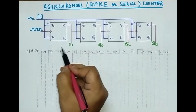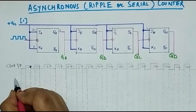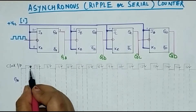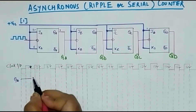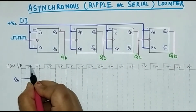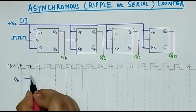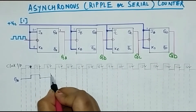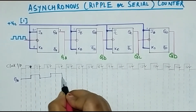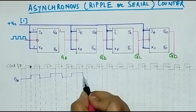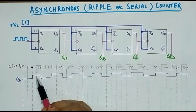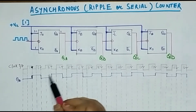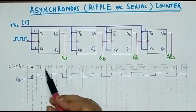Let us draw the output of the first flip-flop in the timeline diagram. I will write QA for the first flip-flop. Initially the output was 0. After the first transition — when the clock was changing from 1 to 0 — it became high. Then again in the second clock pulse it changed, and in the third clock pulse again it changed like this. So whenever there is a transition in the clock, there is a change in the output of QA — it goes from 1 to 0, then 0 to 1, and so on.